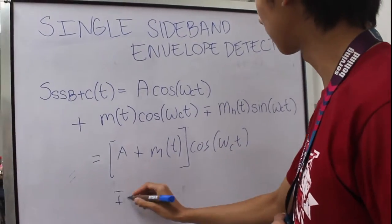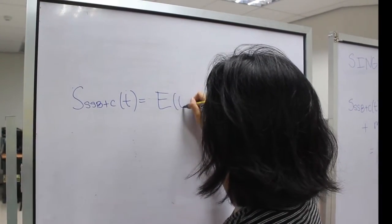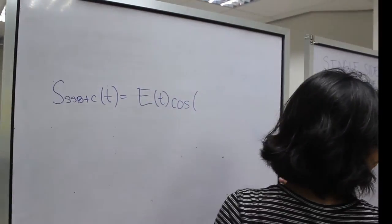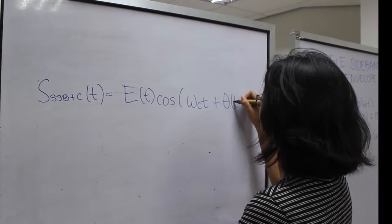Simplifying the function by factoring out cosine omega c t, the function now becomes e(t) cosine of omega c t plus the phase shift.